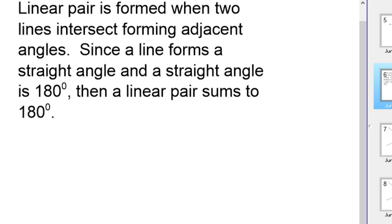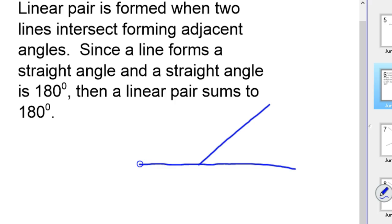The last thing I want to talk about is a linear pair. A linear pair is formed when two lines intersect forming adjacent angles. Since a line forms a straight angle, and a straight angle is 180 degrees, linear pairs sum to 180 degrees. That's kind of a mini proof or paragraph proof for why linear pairs add up to 180 degrees. Here are my two intersecting lines — angle one and angle two form a linear pair because they add up to 180 degrees. They're adjacent angles on two intersecting lines.